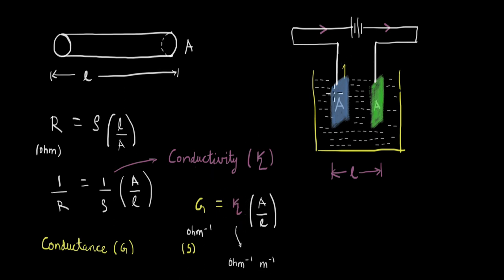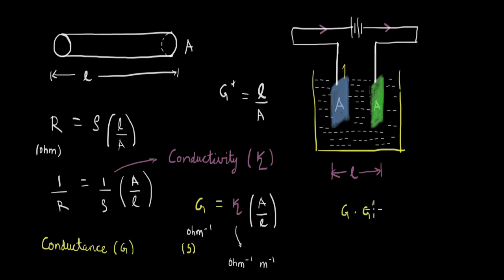To compare different solutions using the same cell, we drain and refill it, so L and A remain fixed. This ratio L/A is called the cell constant, denoted G*. For a given cell, G* equals L over A, and we rewrite the equation as G times G* equals kappa, where G is conductance in Siemens and G* has units of meter⁻¹. So kappa is Siemens per meter, consistent with what we derived earlier.